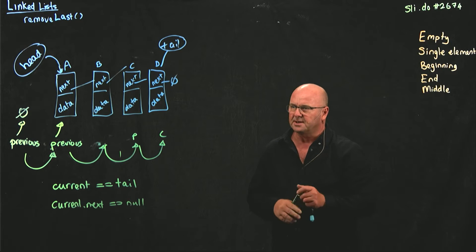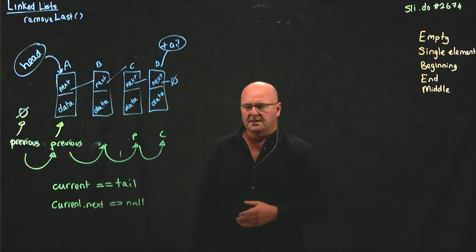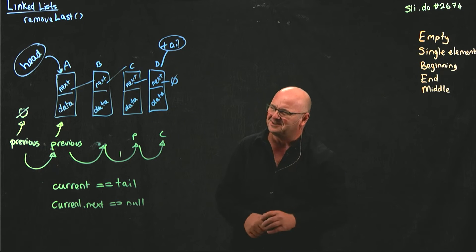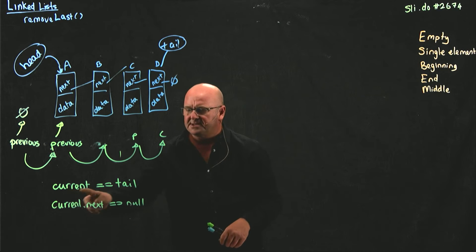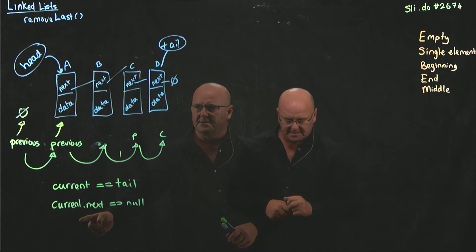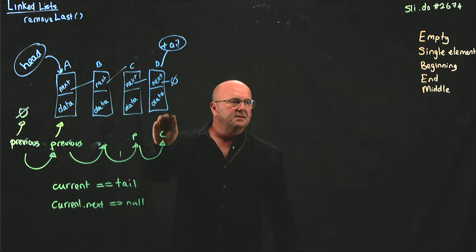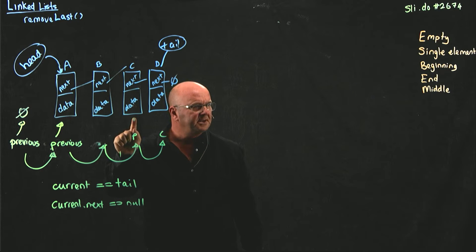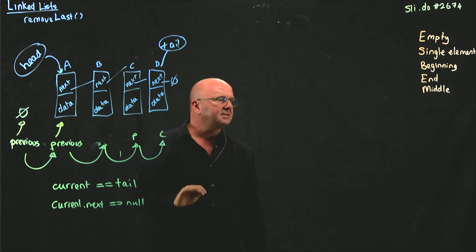So I've got two different ways of stopping. It's up to you how you write this code — I'm giving you alternatives so you can customize your code. The way that makes the most sense for me is to use current equals tail because it's one less chance to get a null pointer exception. So we're going to iterate through the list using previous and current until current points to the last element, previous points to the thing before it, and then all we have to do is set previous.next equal to null. That will delete the last element in the list.